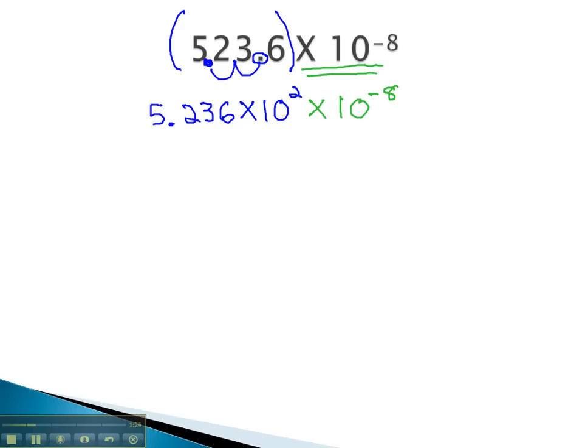We will now use our exponent properties to combine the tens together. Our exponent properties say that if we have a to the m times a to the n, we simply add the exponents together.